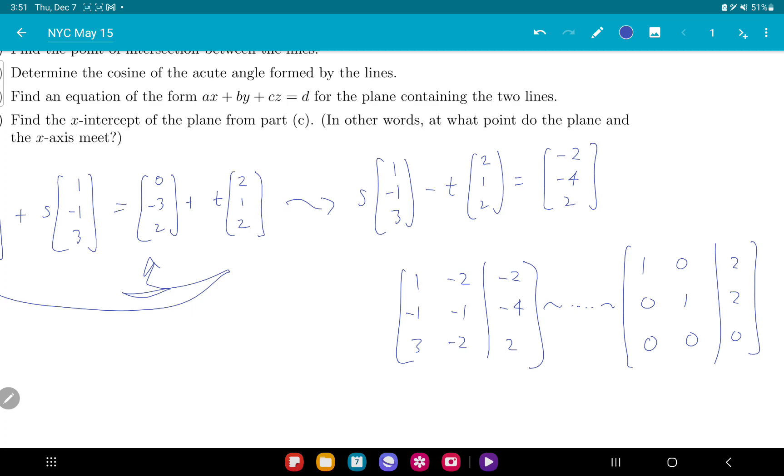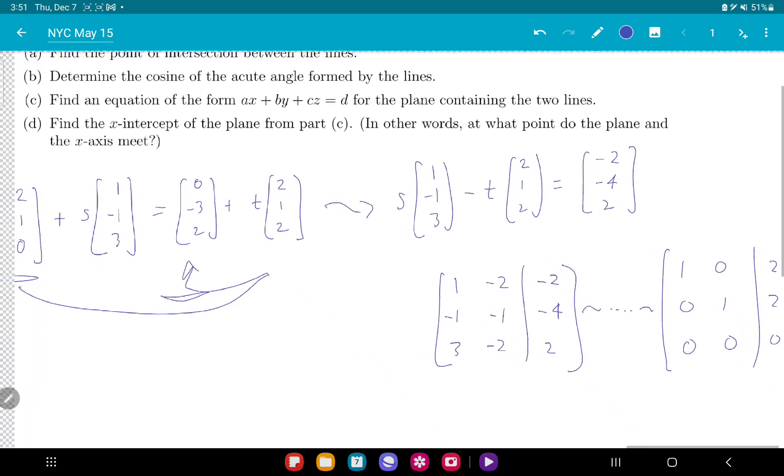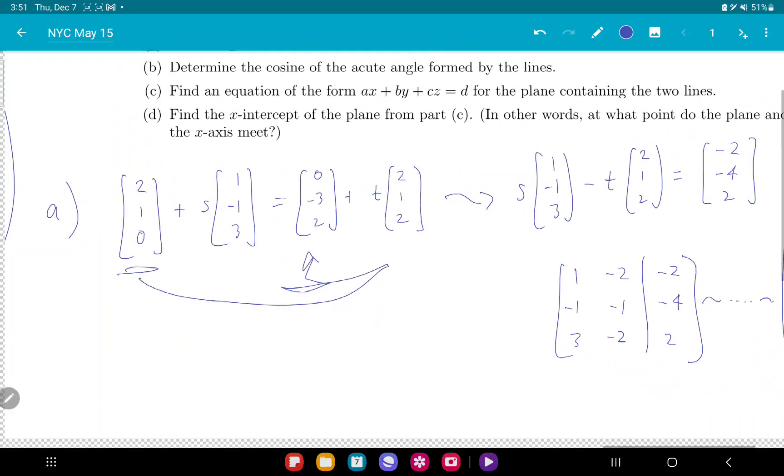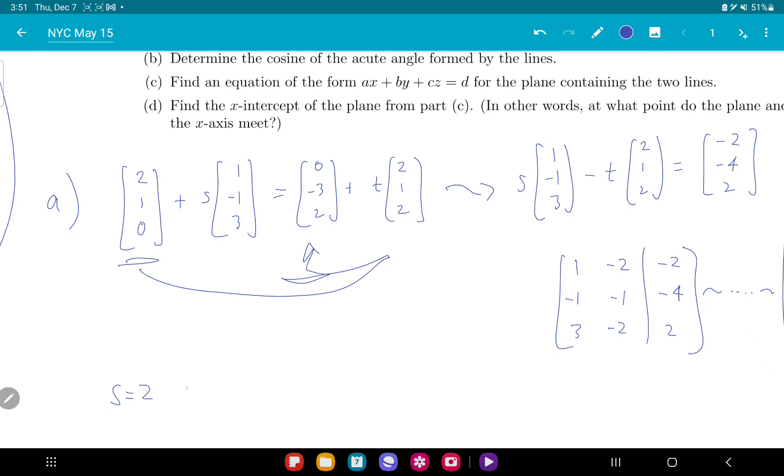So my s value is 2, and my t value is also 2. So I'll take that value, plug it back into this line here to find the point of intersection. That gives 4, -1, 6. So as a point, you get (4, -1, 6). That's my point of intersection.